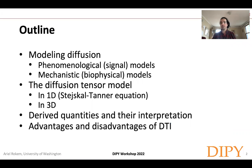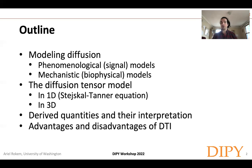This presentation will introduce you to ideas from modeling of diffusion. I'll make an important first distinction about different kinds of models: phenomenological or signal models versus mechanistic or biophysical models. Then I'll talk specifically about the diffusion tensor model, starting with the Stejskal-Tanner equation in 1D, and how this model is extended into 3D. I'll cover derived quantities and their interpretation, the advantages and disadvantages of DTI, and how to fit the DTI model in DiPy.